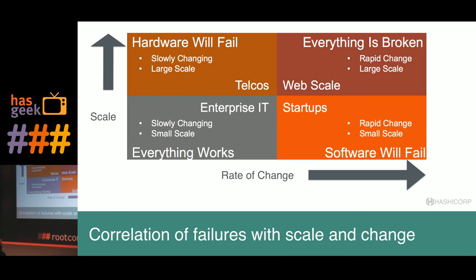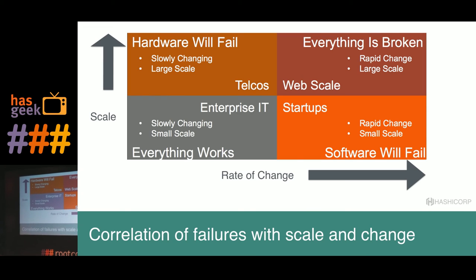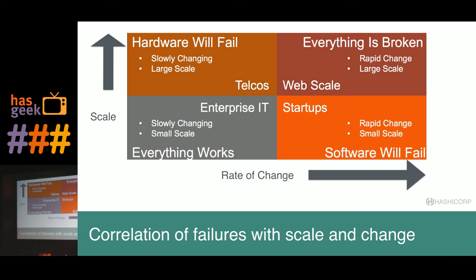In enterprise IT, things usually move very slowly. Everyone plays by the book — there are change gates, release trains. The scale is usually small for internal applications, with tens of thousands of users in most cases, and fleets of servers are also low. Things usually work well except for planned downtime, like database administrators taking the whole application down on a Friday night for maintenance.